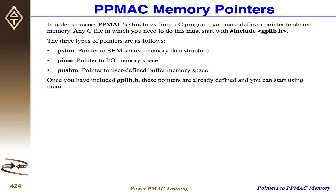If you want to get to user buffer, you use PUSHM, which we usually pronounce 'PUSHM' just for fun. That goes to your user buffer — sys.idata, sys.udata, that sort of thing. These are all defined in GPLib.h.